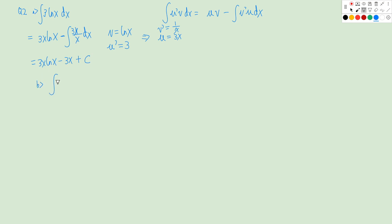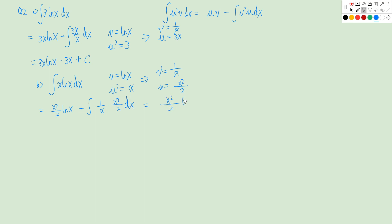For question 2B, we have the integration of X·ln(X) dx. We let V be ln(X) and U' be X. So V' equals 1/X and U equals X²/2. Then U times V is (X²/2)·ln(X), minus the integration of (1/X)·(X²/2) dx. This gives (X²/2)·ln(X) minus the integral of X/2 dx, which equals (X²/2)·ln(X) minus X²/4 plus a constant C.